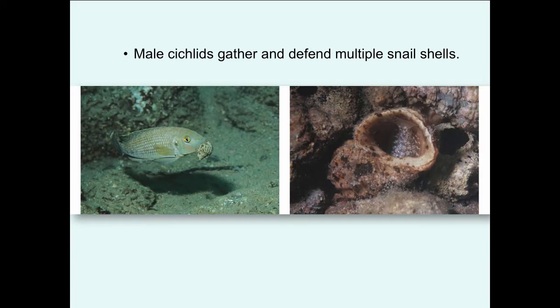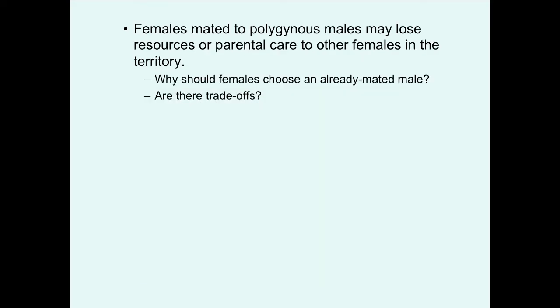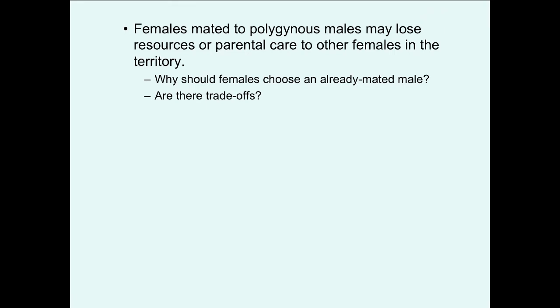Male cichlids gather and defend multiple snail nests, which serve as egg deposition sites to attract females, then defend and protect eggs once females have mated and laid in these territories. Male topi guard green patches of grass to attract females in exchange for matings. In resource defense polygyny, females mated to polygynous males may actually lose out in resources or parental care compared to additional females on that territory.